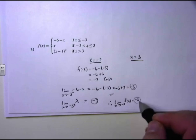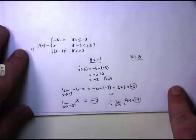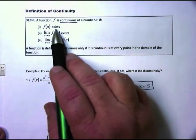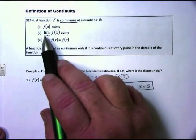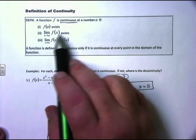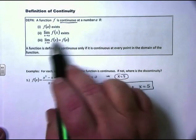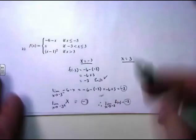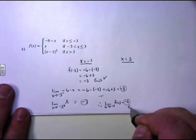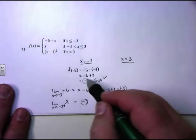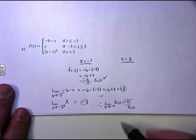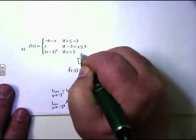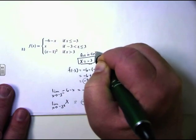The limit exists. Going back to our definition: the functional value exists and equals negative 3, the limit exists and equals negative 3, and they are equal to each other. So at x equals negative 3, f of x is continuous.